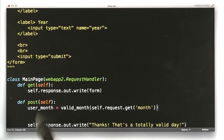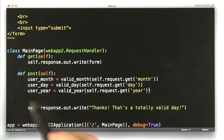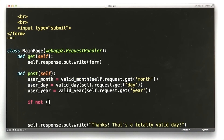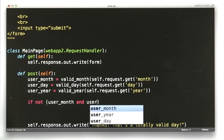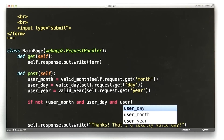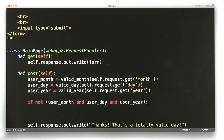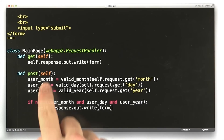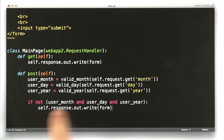I'm going to go ahead and add this for the day and the year as well. So we've got these three variables, and now let's actually check them. If not user month and user day and user year, we're going to re-render the form again. If all three of these aren't true, we're going to render our form.